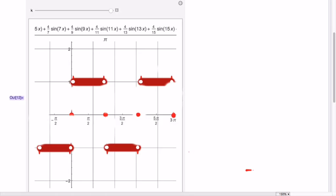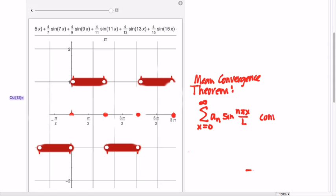But the Fourier series somehow actually does. The Fourier series gives you the intermediate value. And so there's a theorem called the Mean Convergence Theorem that tells us the manner in which Fourier series converge. So the sum of a_n sine of nπx over L, x equals 0 to infinity. So this will converge, converges to f(x) where f(x) is continuous.